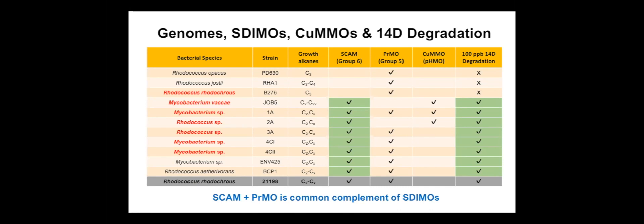Most of the remaining talk focuses on SCAM. Genomics — looking at the total gene complement of an organism — is a very powerful method for examining what an organism might be capable of. We have sequenced various organisms and find that a large majority contain SCAM, quite a few contain propane monooxygenase (PrMO), and a few contain an entirely different class called copper-containing monooxygenases. There is a very close correlation between the presence of SCAM and the ability to degrade 1,4-D at very low concentrations.